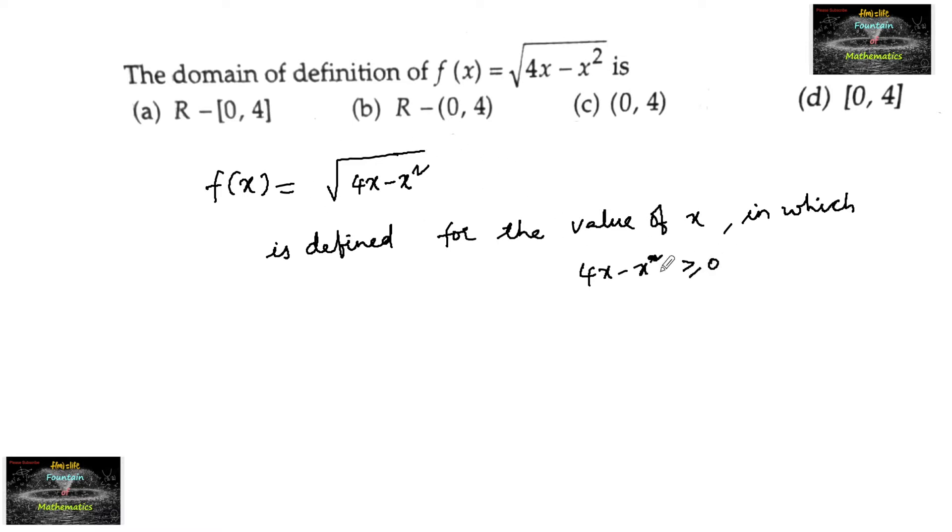We consider 4x - x² ≥ 0. Taking x common, we can write x(4 - x) ≥ 0, or we can write x(x - 4) ≤ 0 by taking negative common, so the inequality changes to less than or equals to 0.